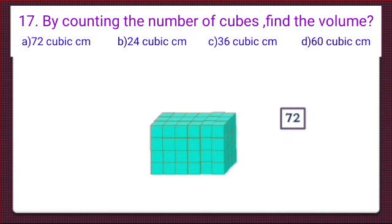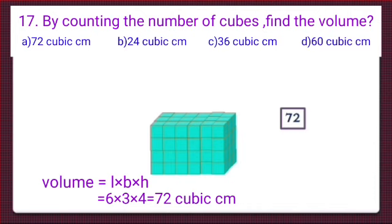We have another method to find the volume of this cuboid. We all know volume is equal to length × breadth × height. The length of the cuboid is 6 centimetres because it has 6 cubes along the length, the breadth is 3 centimetres, and the height is 4 centimetres. So the volume is 6 × 3 × 4, which equals 72 cubic centimetres.